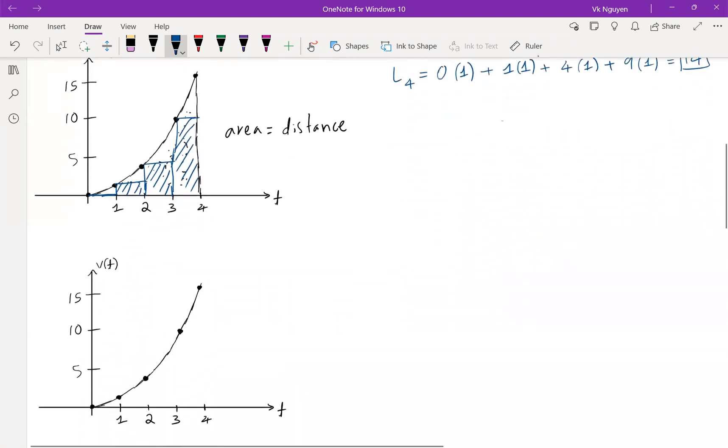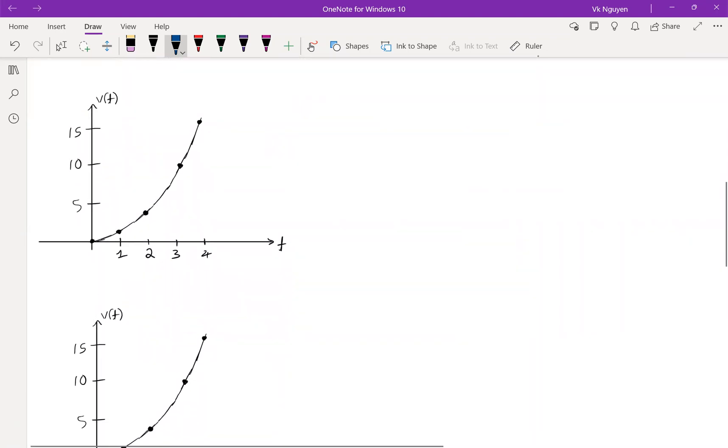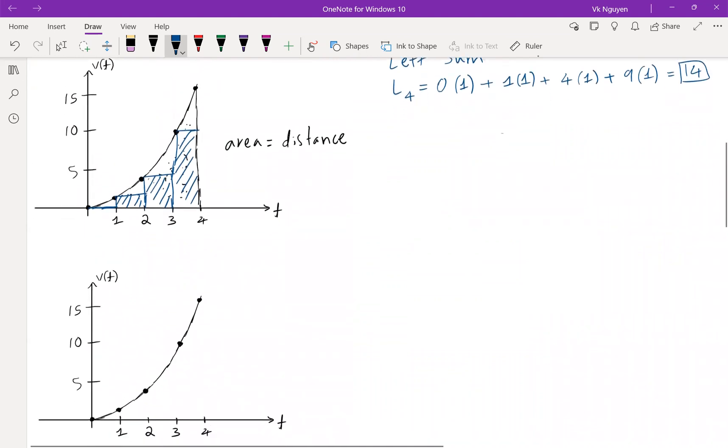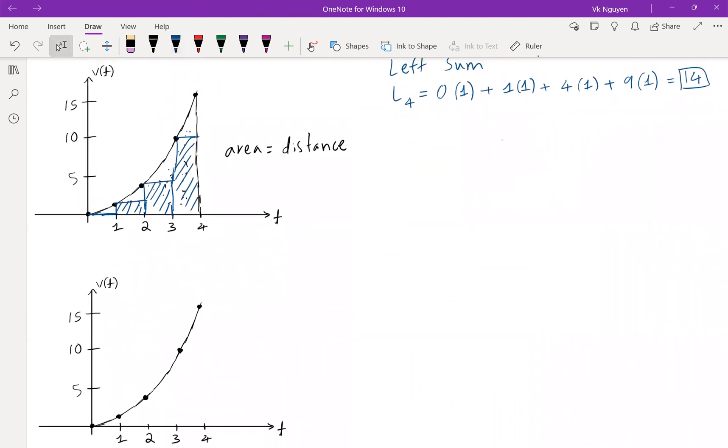Another estimation we can do is instead of using the left sum, that is we use the point on the left side, we begin with the point on the right side. So we begin with this point, and we're going to draw a rectangle. Now begin with the point next to it, get another rectangle. Get another one, and another one. See, we have four rectangles.